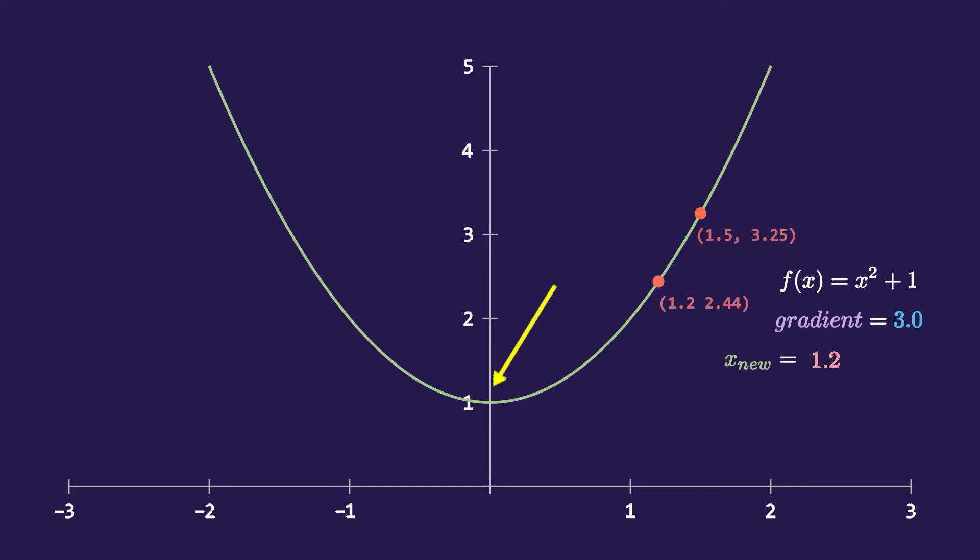But our minimum is here and the current point is at 1.2, 2.44 which is still too far away from the actual minimum. So now we will calculate the minimized version of our second point which will give us a third point that is even minimized. And if we do this again and again we will get closer and closer to our actual minimum.